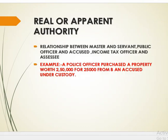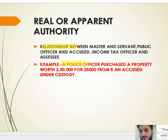Real or apparent authority refers to relationships such as master and servant, public officer and accused, or income tax officer and assessee. For example, a police officer purchased a property worth rupees two lakh fifty thousand for only twenty thousand from an accused under his custody. Since the police officer has a dominating effect on the accused, this is a case of undue influence.